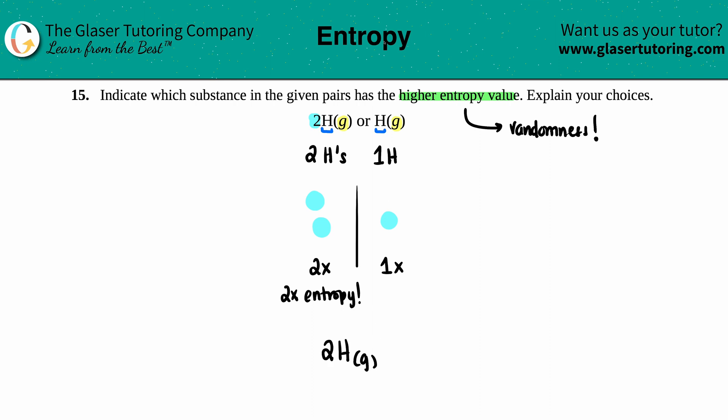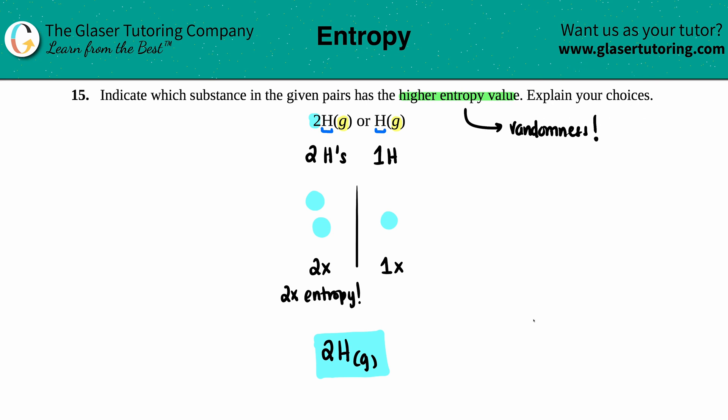2H gas has higher entropy because two H's are more than one H — and that's your reasoning. I really hope this helped you out, let me know in the comments. Thank you so much for watching, subscribe to the channel, and let's keep studying!